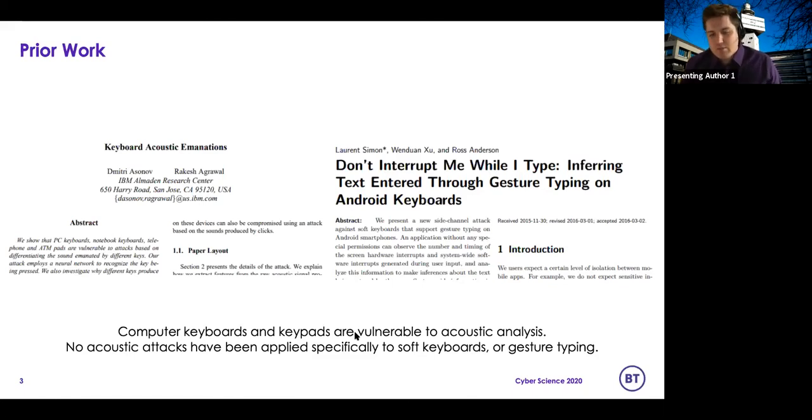We've also seen similar application of this to soft keyboards. We've not yet seen it to gesture typing. The closest example we could find is this paper on the right, Don't Interrupt Me While I Type. This looks at software interrupts that are being produced by the keyboard. If you monitor the timing between these interrupts, you can rebuild sentences. What we've done is applied a similar concept to the acoustic information that comes from haptic feedback.